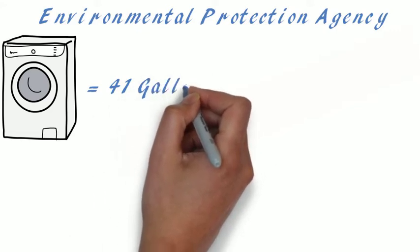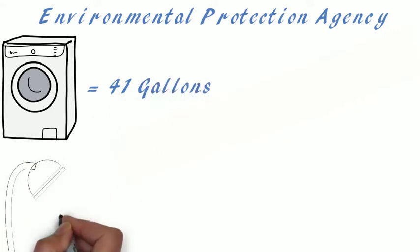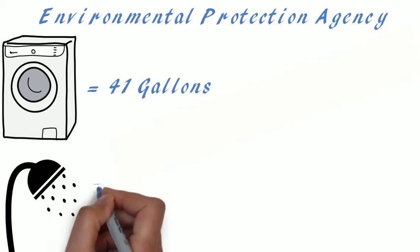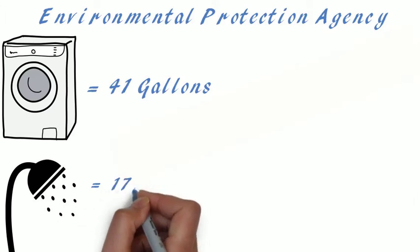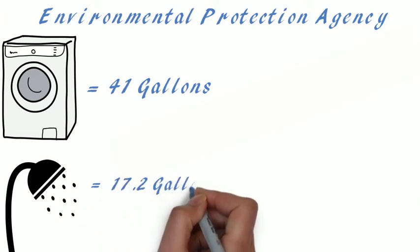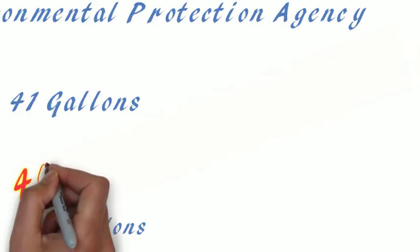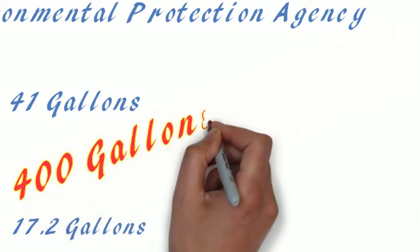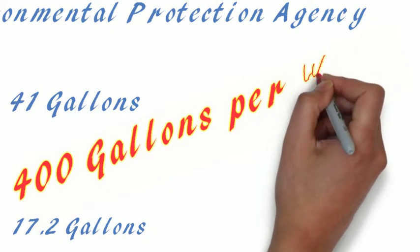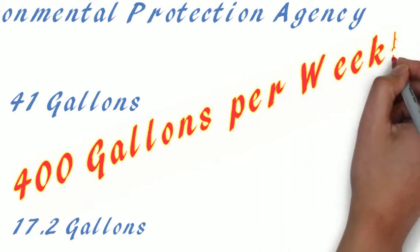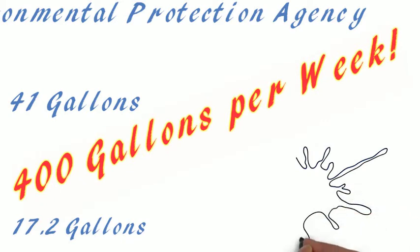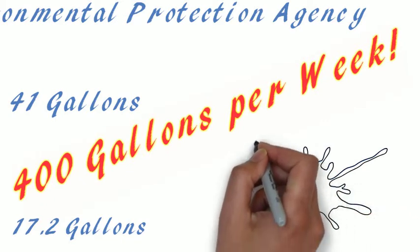According to the EPA, the average American washing machine uses 41 gallons of water per load. And in an average American home, showers are typically the third largest water user. The average American shower uses 17.2 gallons of water. Based on these water usage estimates, an average American family produces almost 400 gallons of recyclable gray water per week.